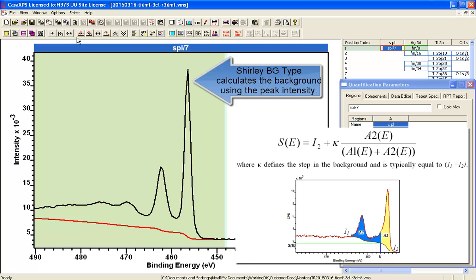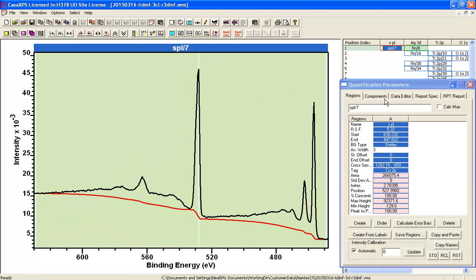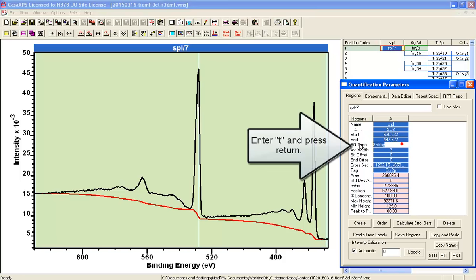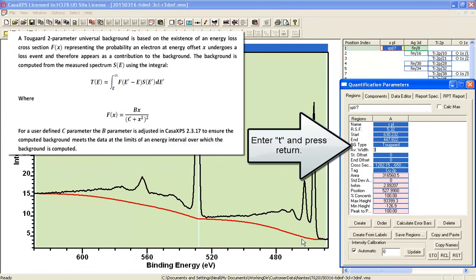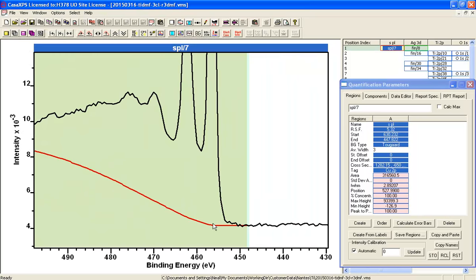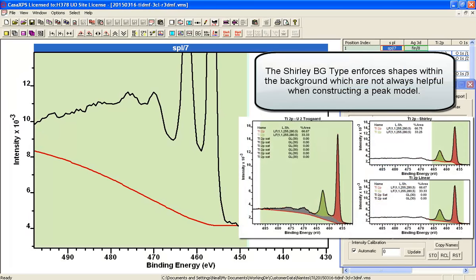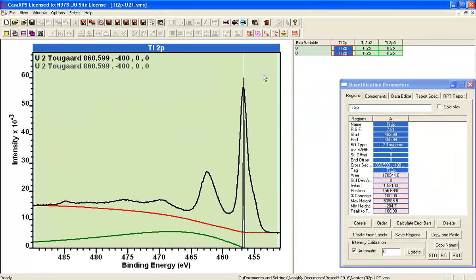And if we introduce a 2GAR background, which is based on a universal cross section, we then obtain a background without these S shapes within the main part of the background. And as you can see, it's a much smoother background. And this gives us an opportunity to produce something which is more physically meaningful than the Shirley background.